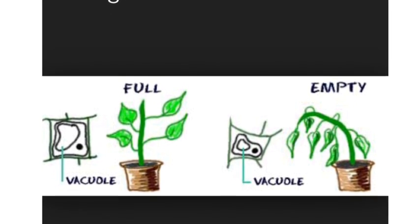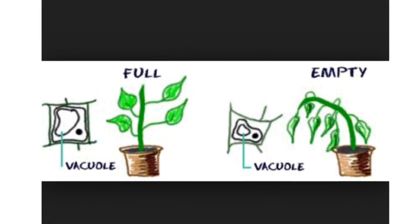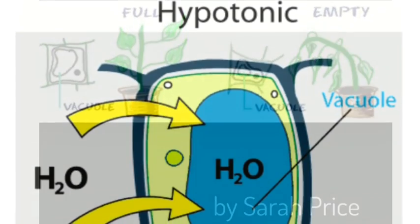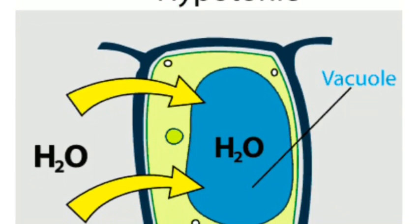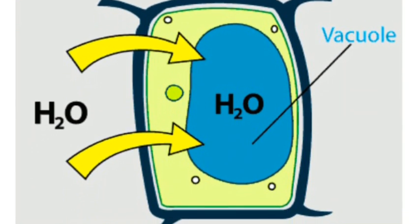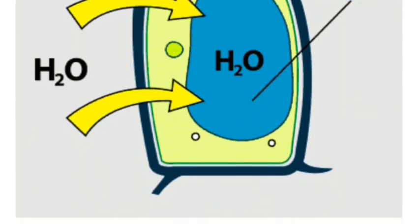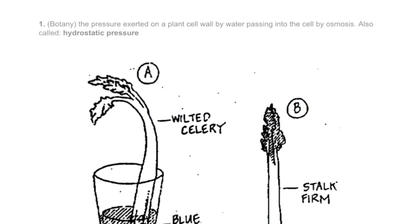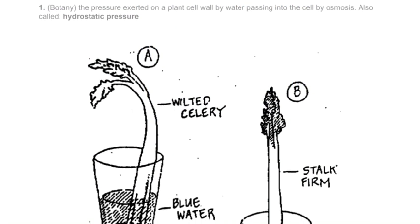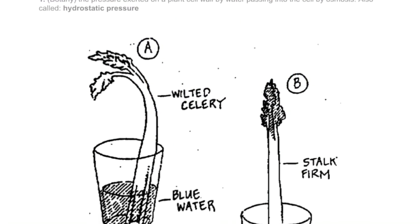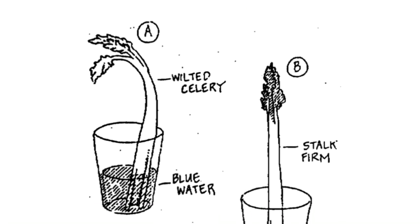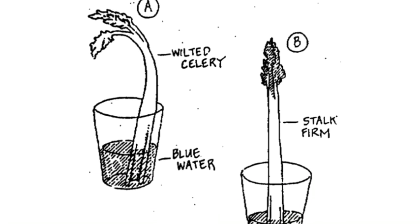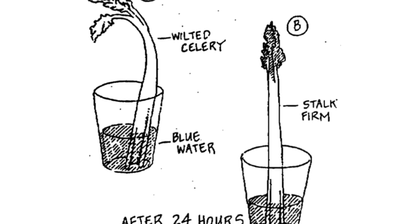Turgor pressure, a presentation by Sarah Price. Turgor pressure, by dictionary definition, is a pressure exerted on a plant cell wall by water passing into the cell by osmosis. Another name for it is hydrostatic pressure.